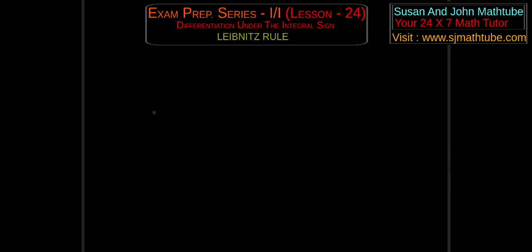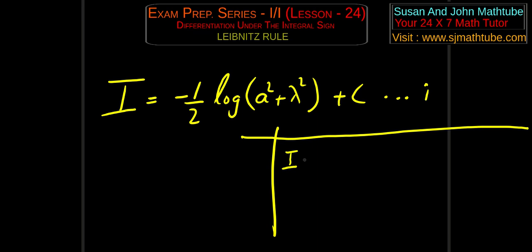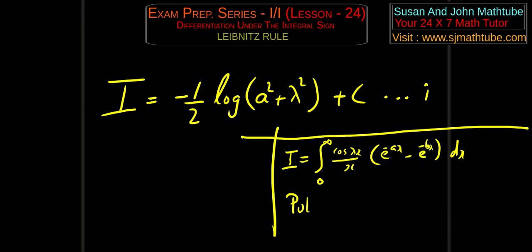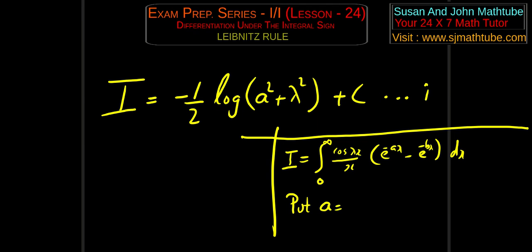I hope you understood that step. So writing that neatly: we get minus 1 by 2 log of a squared plus lambda squared plus c, and we call it equation number 1. Now time for our box. The given question is the integral from 0 to infinity of cos(λx) by x times e to the power minus ax minus e to the power minus bx dx. What we do is we put a value for a such that the integral will vanish. We differentiated with respect to a, so we put a equal to b, which gives i equal to 0.